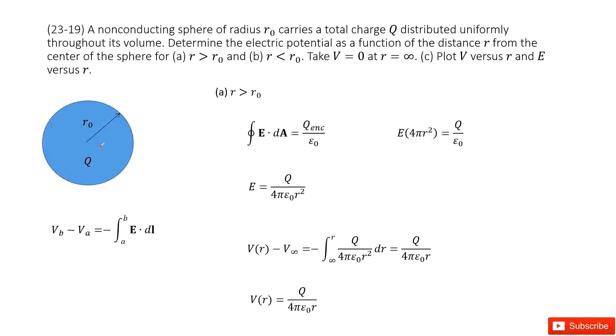Chapter 23 is about electric potentials. So we look at this system. We have a non-conducting spherical object. Keyword: non-conducting. It tells us there's a total charge Q distributed uniformly throughout its volume. So that means the charge is distributed everywhere for this spherical object.